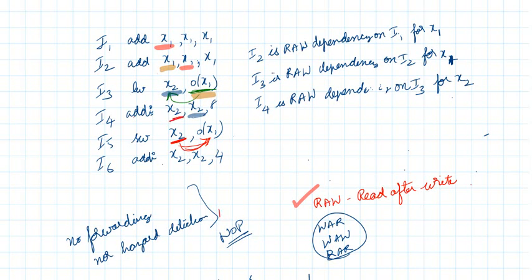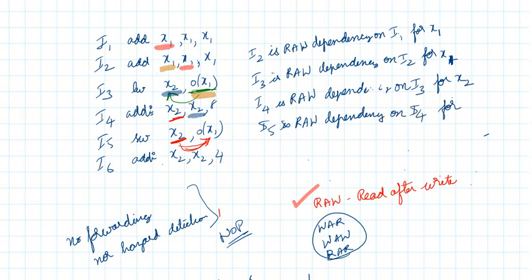Instruction five is a read-after-write dependency on I4 for register x2. Now come to the last instruction.